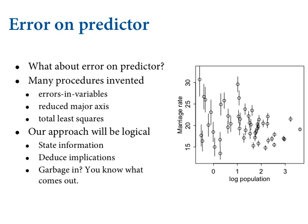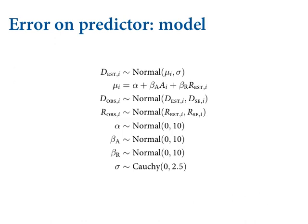These ad-hoc procedures can work, but they're very fragile — if you modify the data context a little bit, they cease to give you good inferences. It'd be much nicer to go from the information about the data generating process to an inferential model — and that's the Bayesian strategy. Our approach will be merely logical: we state the information we have about errors on variables and then deduce the implications.